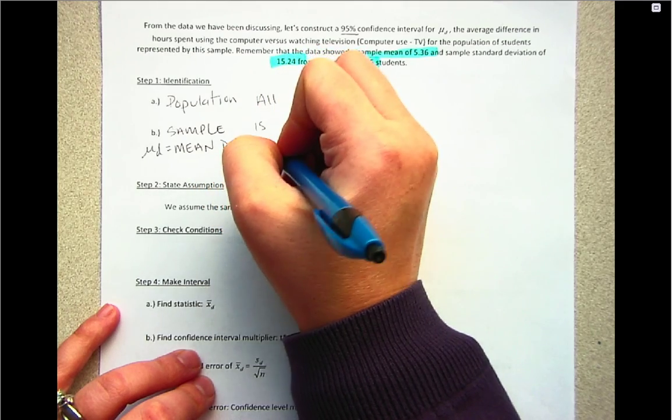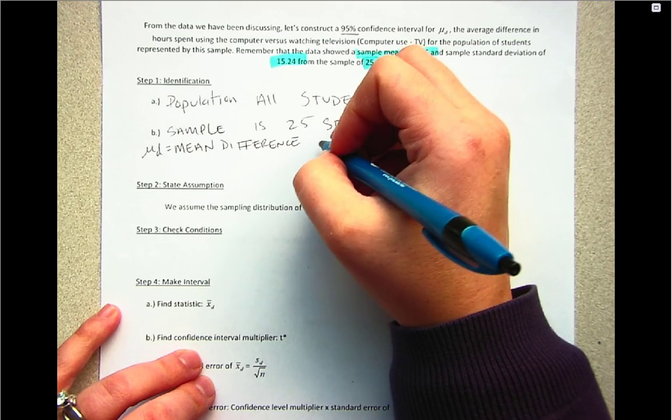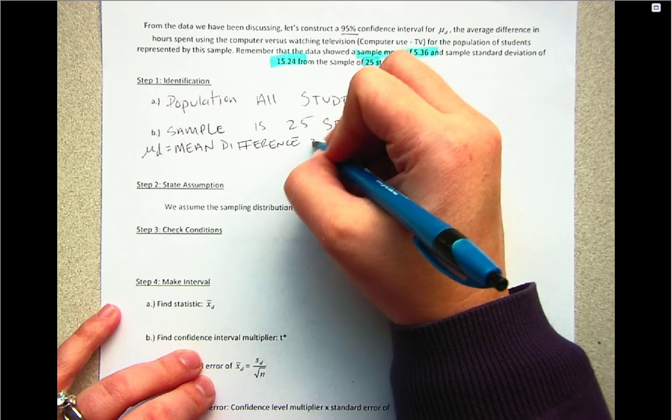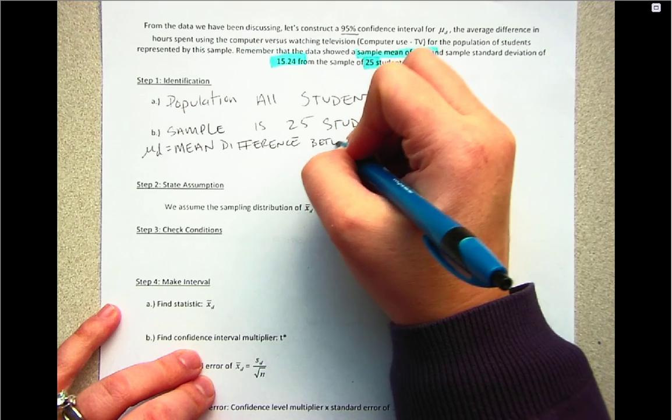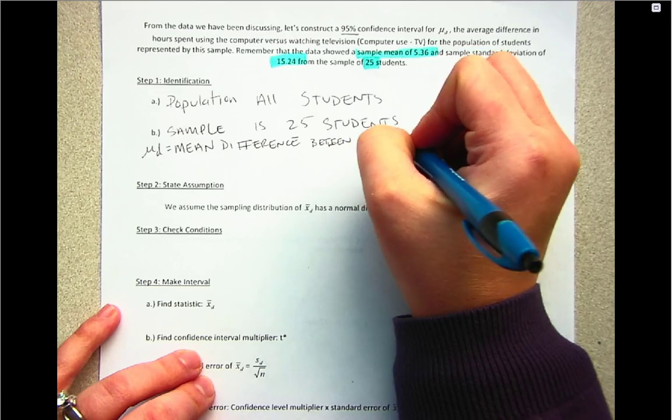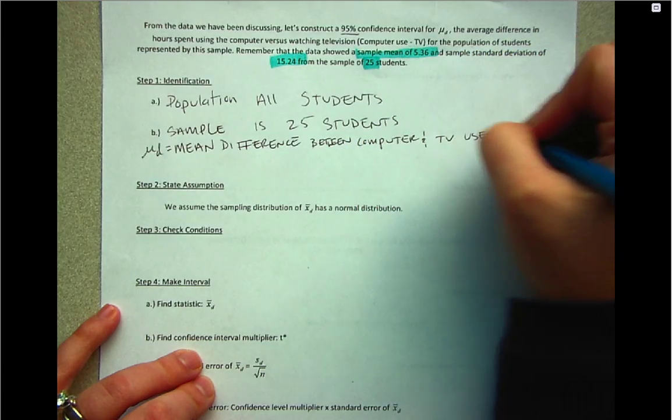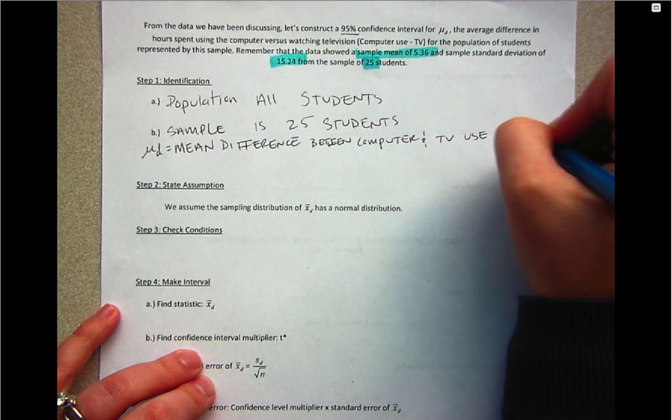difference, so we have mean difference. Similar to other identifications of μ, we're going to specify what we're measuring. Here we're measuring the difference between computer and TV use for students.